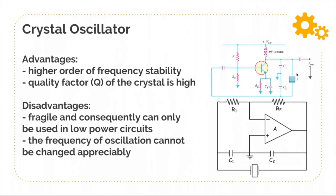Even the smallest deviation from fp will cause the oscillator to act as an effective short circuit. Consequently, we have an extremely stable oscillator. This circuit has some advantages and disadvantages.